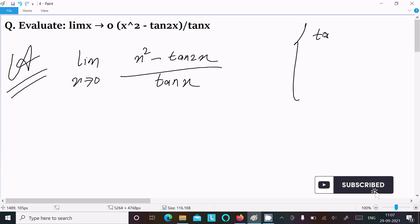So tanx: limit as x tends to 0 of tanx divided by x, that is equal to 1. Like that, limit x tends to 0.